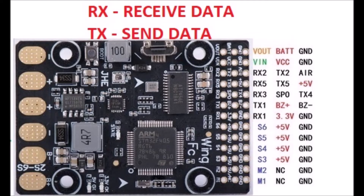Flight controllers have so-called UART serial ports, where one line is used to receive information from the radio, and another line is used to send information from the controller to the radio. The first is called the RX line, and the second is called the TX line, or telemetry.